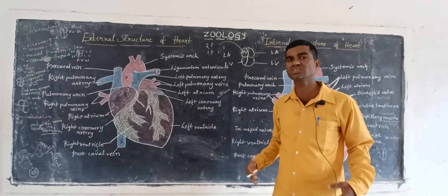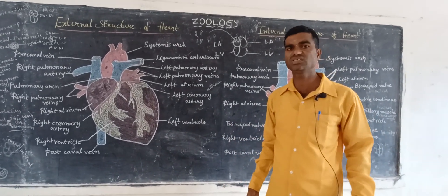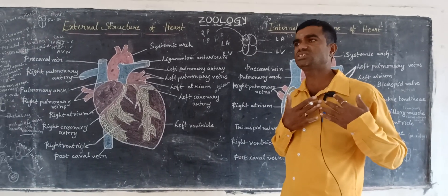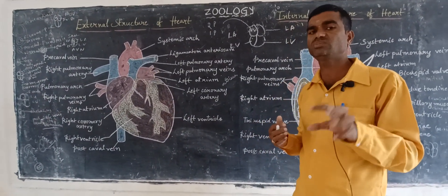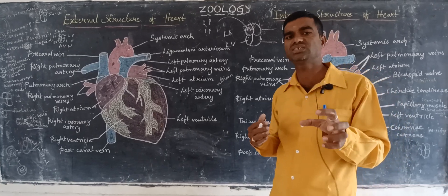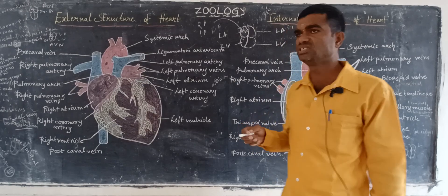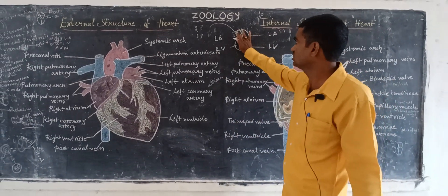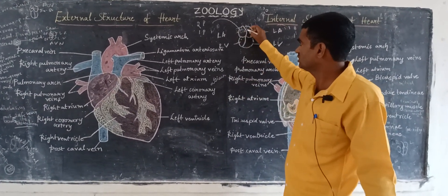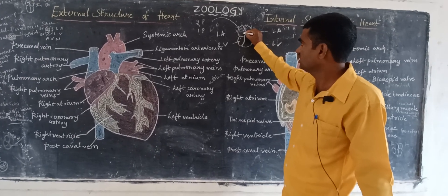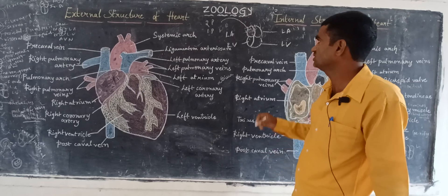The precaval veins are the superior vena cava, and the postcaval vein is the inferior vena cava; they pump deoxygenated blood into the right atrium. The opening of the right atrium is guarded by the valve of the Thebesian, so the Thebesian valve is present here.